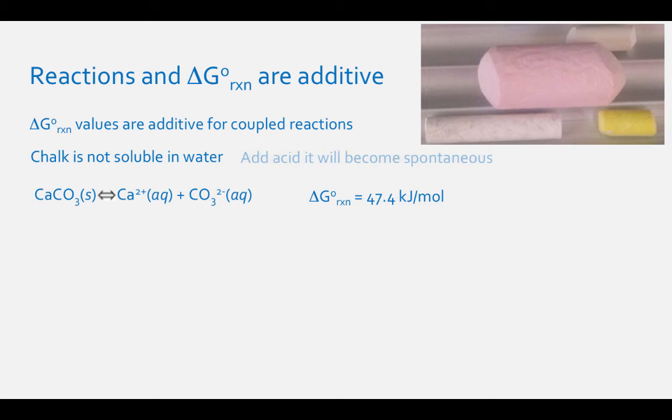However, if you add acid to this reaction, or hydrogen ions, it will become spontaneous. This is because this reaction, 2H+ aqueous plus CO3 2- aqueous results in H2O liquid plus CO2 gas, has a standard delta-G of negative 103.8 kilojoules per mole.